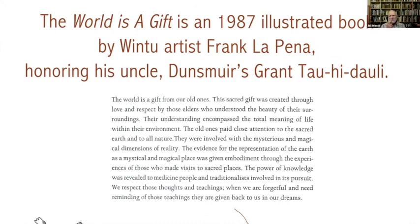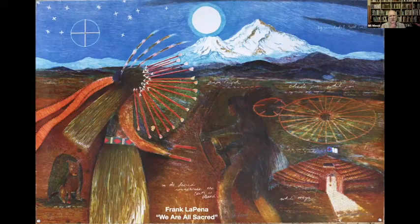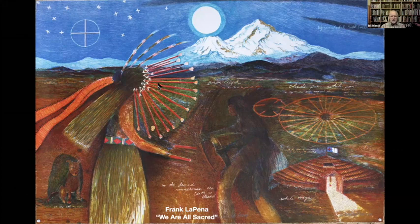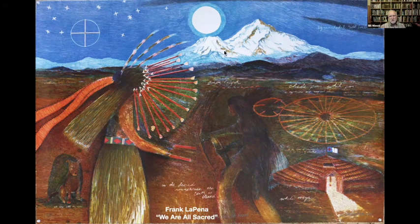This is called 'We Are All Sacred' — a pretty well known print, a big lithograph, three or four feet wide. The dancers and those rays coming off — Frank LaPena was a dancer. He gave an interview last year, and he talked about how the settlers and white men couldn't understand the religion at all — they had no idea that you have to do the dances, you have to do the songs in order to enter into those magical realms. And the dress, the headdress. Frank LaPena was part of News from Native California.